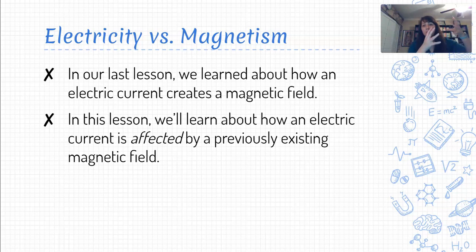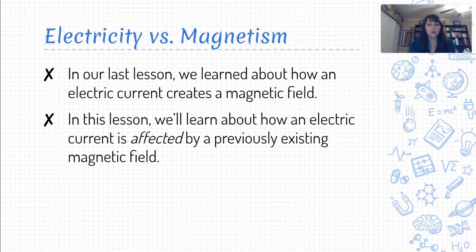In this lesson, if we've already got a pre-existing magnetic field — there's already a bar magnet or something creating a magnetic field — and then we end up running a current through that pre-existing magnetic field, how is the current going to be affected by that field? So last lesson, the current created the field. In this lesson, the field is already there, and the current's just a visitor passing on through, and we want to see what happens to it.